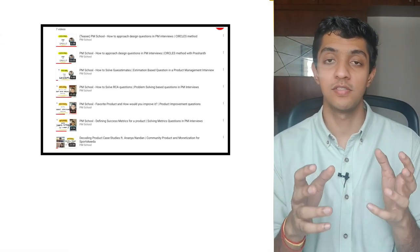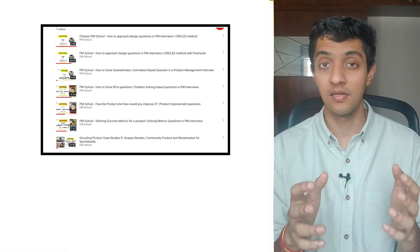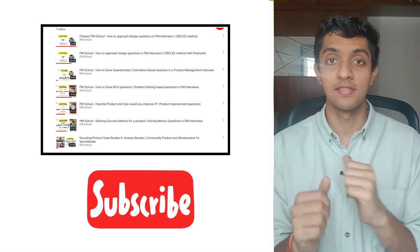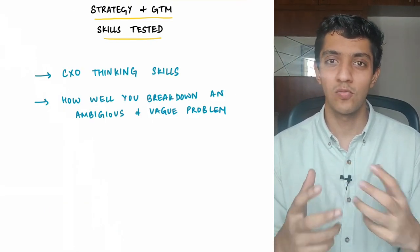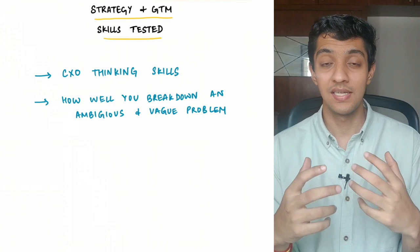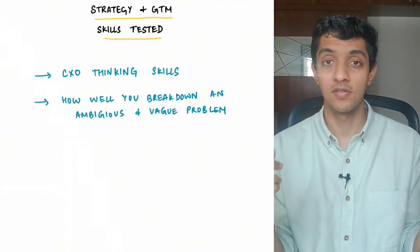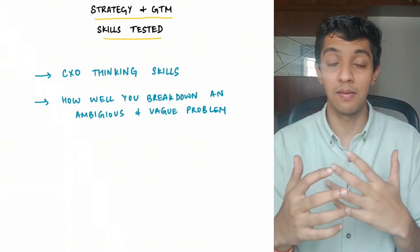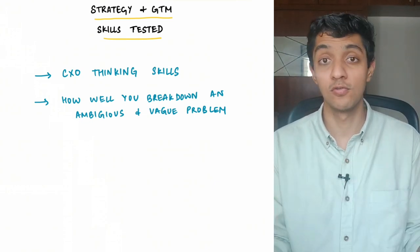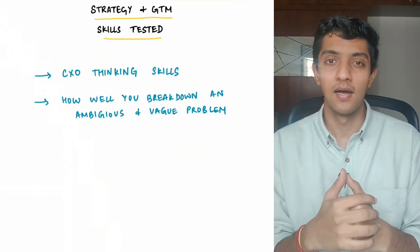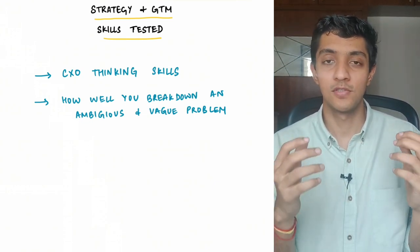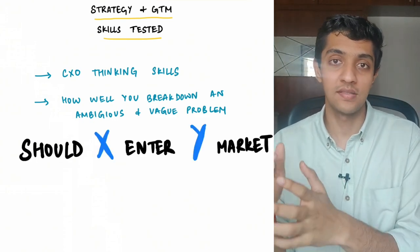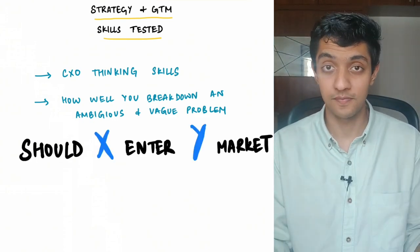Before we jump ahead, if you haven't checked out the previous videos on the channel, do make sure to check them out and don't forget to hit that like and subscribe button. Strategy and go-to-market questions generally test you on how well you're able to put on your CXO thinking hat and how well you're able to break down a vague and ambiguous problem. The question generally comes in the form of: should X enter Y market, where X is the company and Y is the market.